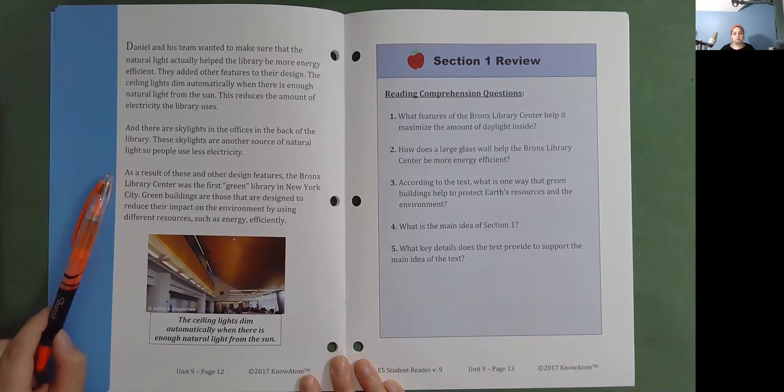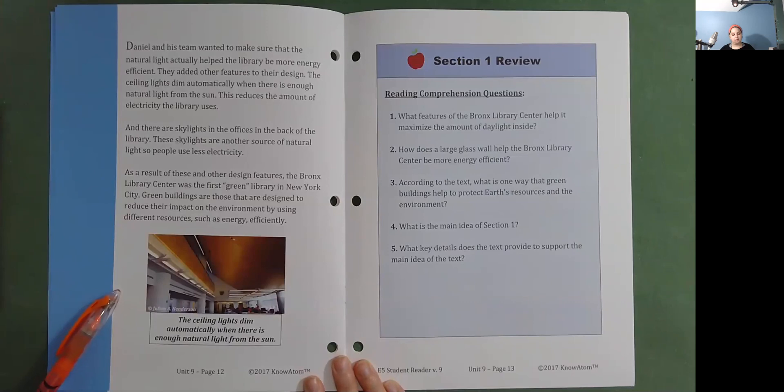Green buildings are those that are designed to reduce their impact on the environment by using different resources, such as energy, efficiently. The ceiling lights dim automatically when there is enough natural light from the sun.